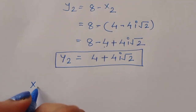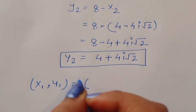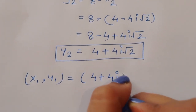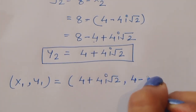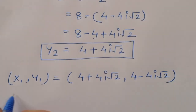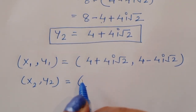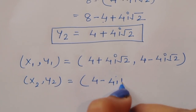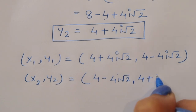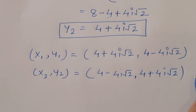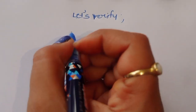So we have two solutions. Solution 1: x1 equals 4 plus 4i square root of 2 and y1 equals 4 minus 4i square root of 2. Solution 2: x2 equals 4 minus 4i square root of 2 and y2 equals 4 plus 4i square root of 2. Now let's verify whether these solutions are correct.